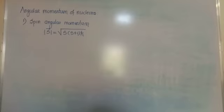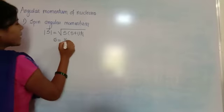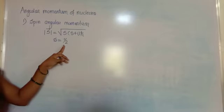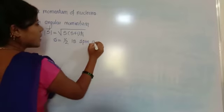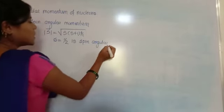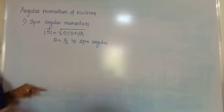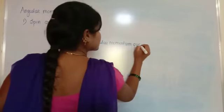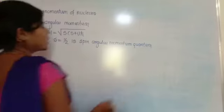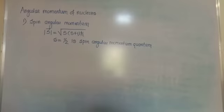Here, s is the spin angular momentum quantum number, which has the value s = 1/2. Because the spin quantum number always has the value 1/2, this applies every time for nucleons.